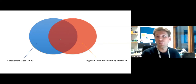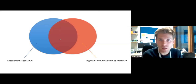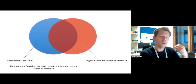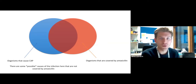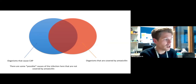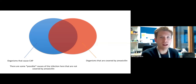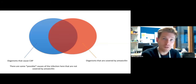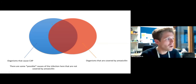That best-guess approach is what feeds into the guidelines when they're written. There are other possible causes of infection not covered by amoxicillin. Pragmatically, you would prescribe and then review — if the child doesn't get better, you might then consider those other agents.